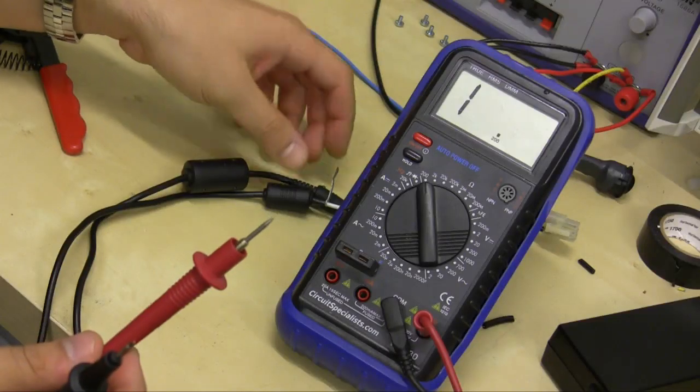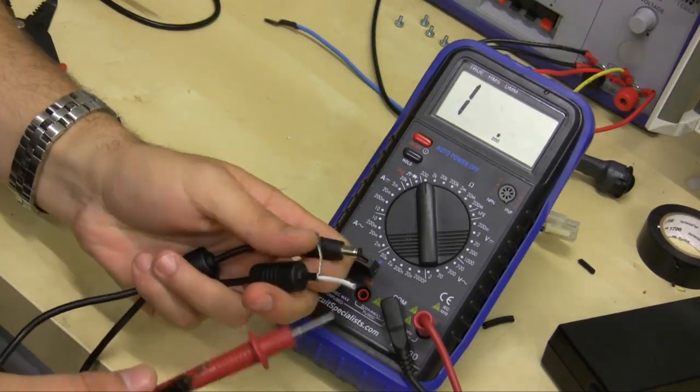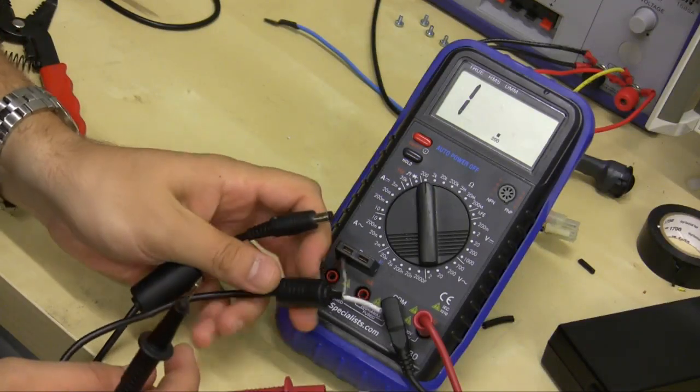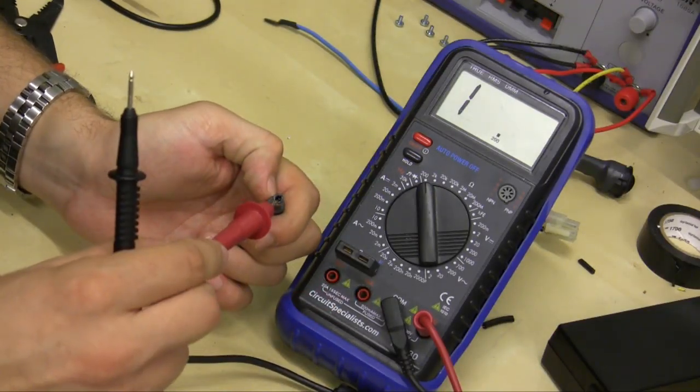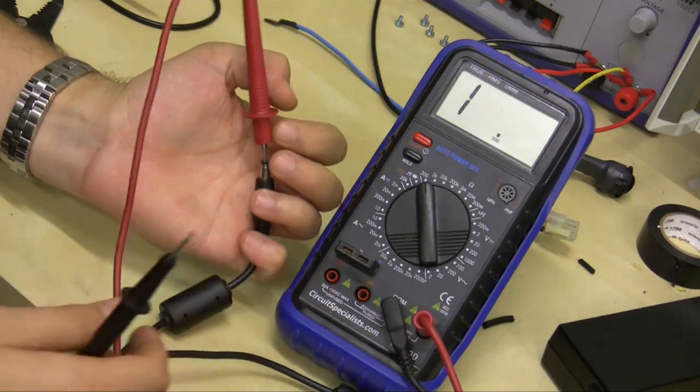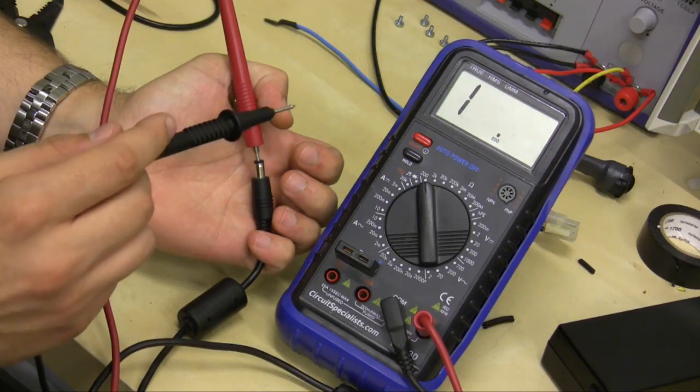So I'm going to take the barrel connector with the wire I just cut. And one side or one of the probes I'm going to put inside the barrel connector. And as you remember, the center of the barrel connector was positive.